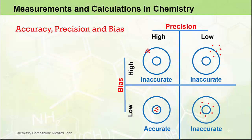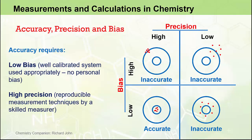In summary, the conditions for accuracy shown at the bottom left require low bias and high precision. We require low bias by having a well calibrated measuring system that is used appropriately, so we do not introduce any personal bias through incorrect use. The measurements also need to have high precision — they need to be reproducible — and a skilled measurer needs to be able to make those measurements in exactly the same way to get precise, reproducible, and therefore accurate measurements.